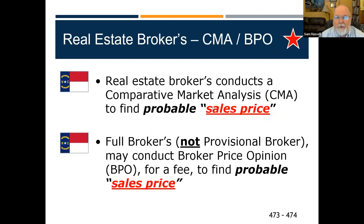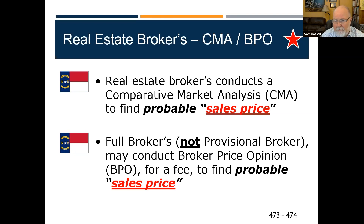As an agent, you can do a comparative market analysis or competitive market analysis — either one — and find a probable sales price or a range of prices. When you become a full broker, a bank might hire you to do a broker price opinion, which is similar but requires a little more. In a CMA you can give a range, like $150,000–$160,000, based on all the comparisons.